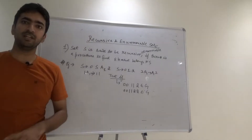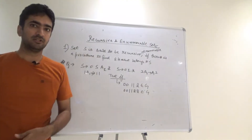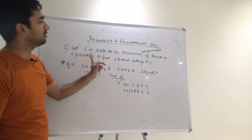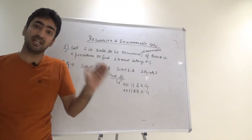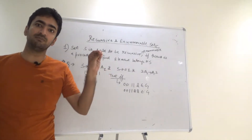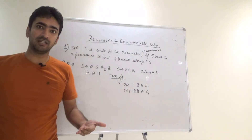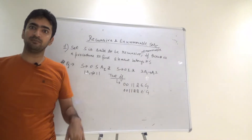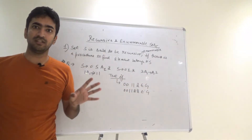Hello guys, I hope everyone is fine. In today's video we will be discussing recursive and enumerable sets. We are going to firstly discuss the definition. A set S is said to be recursively enumerable if there is a procedure to find whether an element belongs to S or not. A string will be given to you and you have to test whether that string belongs to a particular language or not.